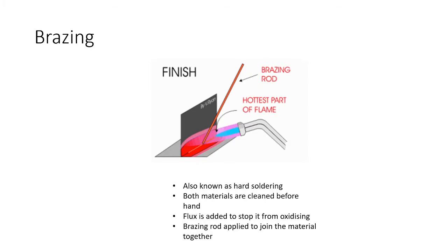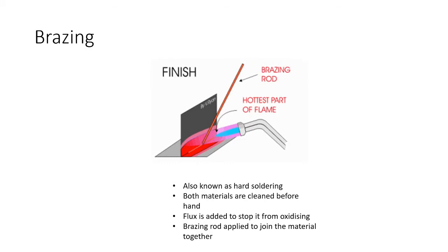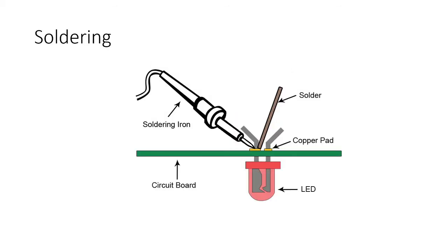Brazing, sometimes called hard soldering, involves cleaning the metal surface until it's shiny, adding flux to prevent oxidation, applying heat, then melting a brazing rod — which acts as the glue — into the joint. The brazing rod fills the cracks and joins the pieces together. Brazing is weaker than the other forms of welding but still has its place. Because the brazing rods have a coppery colour, this can sometimes be incorporated as part of the design.